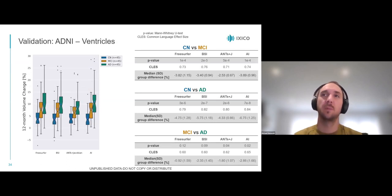Atrophy in the ventricles looks very similar for our methods. We have a similar range of values and significant group differences between CN and MCI. However, again, FreeSurfer and BSI fail to show significant group differences between MCI and AD groups.